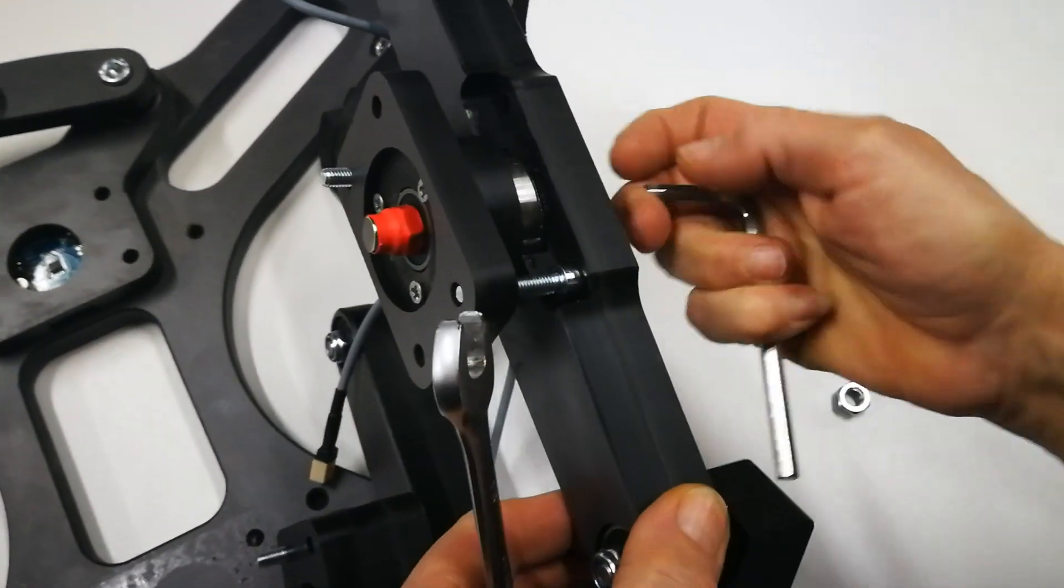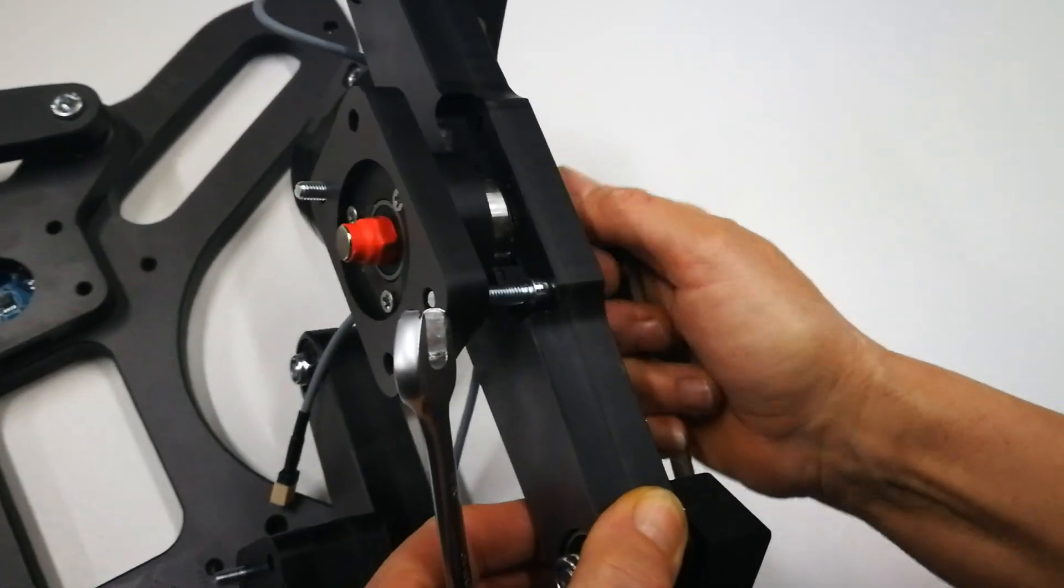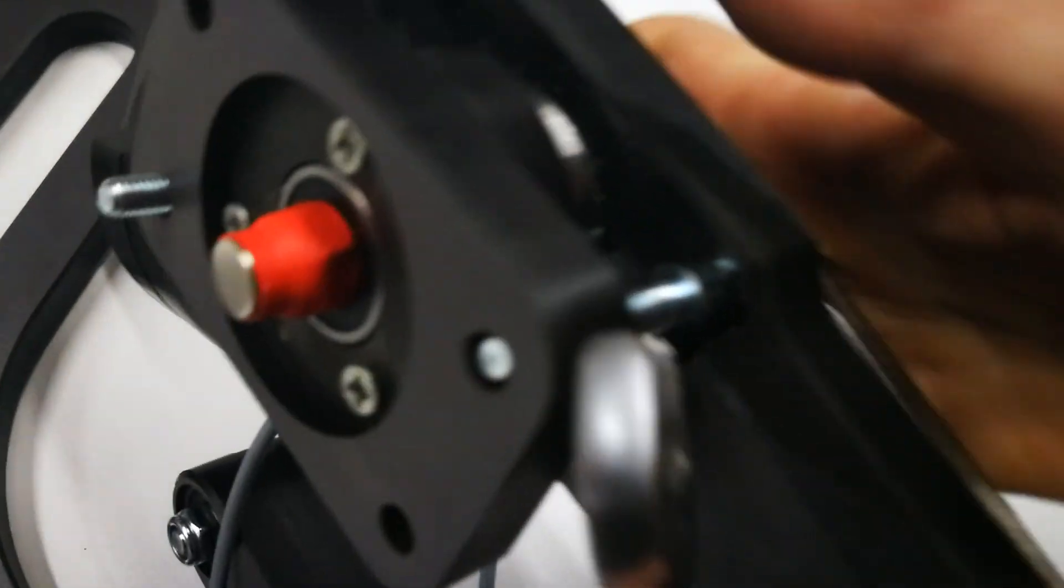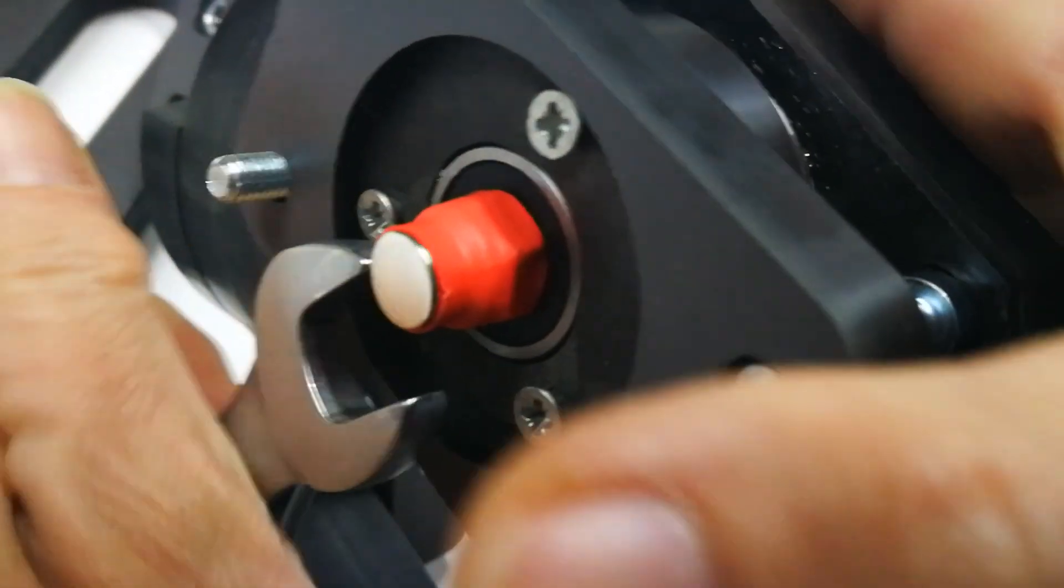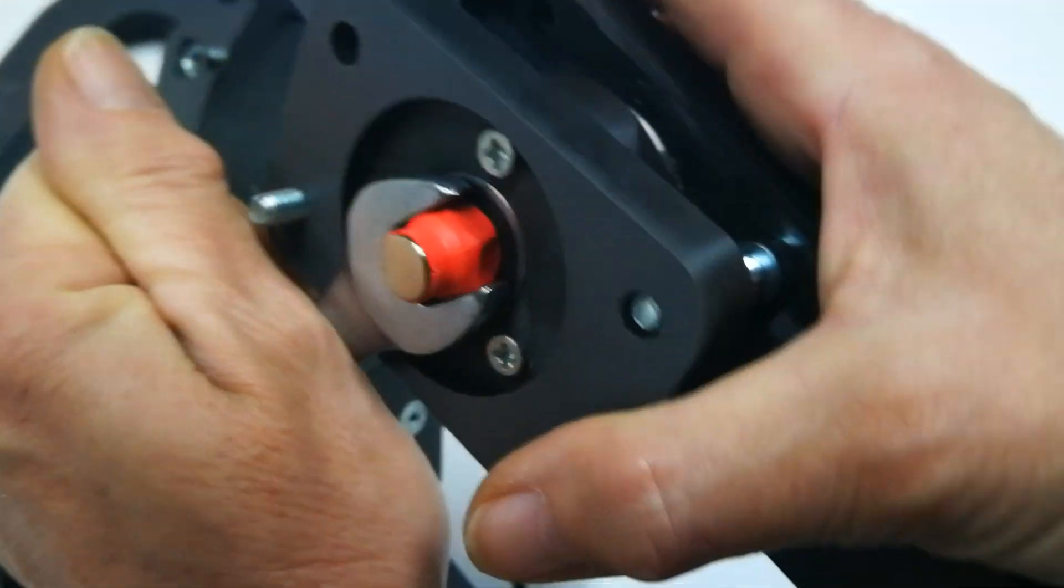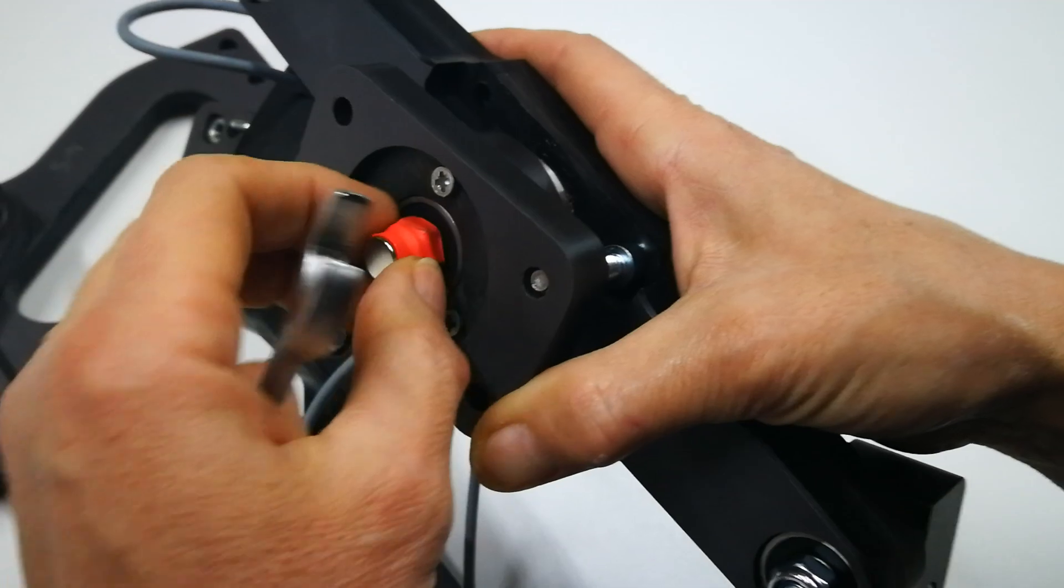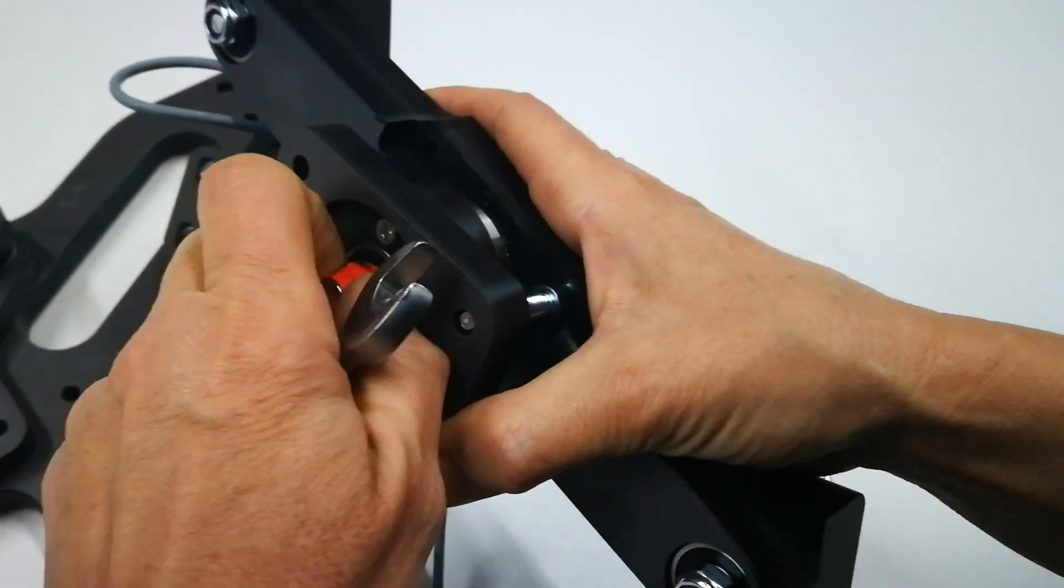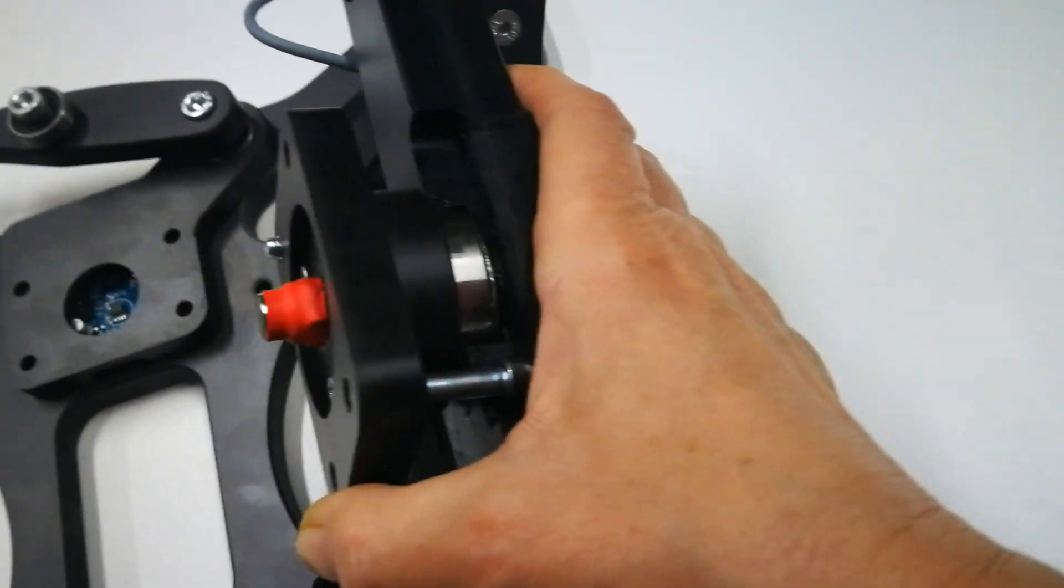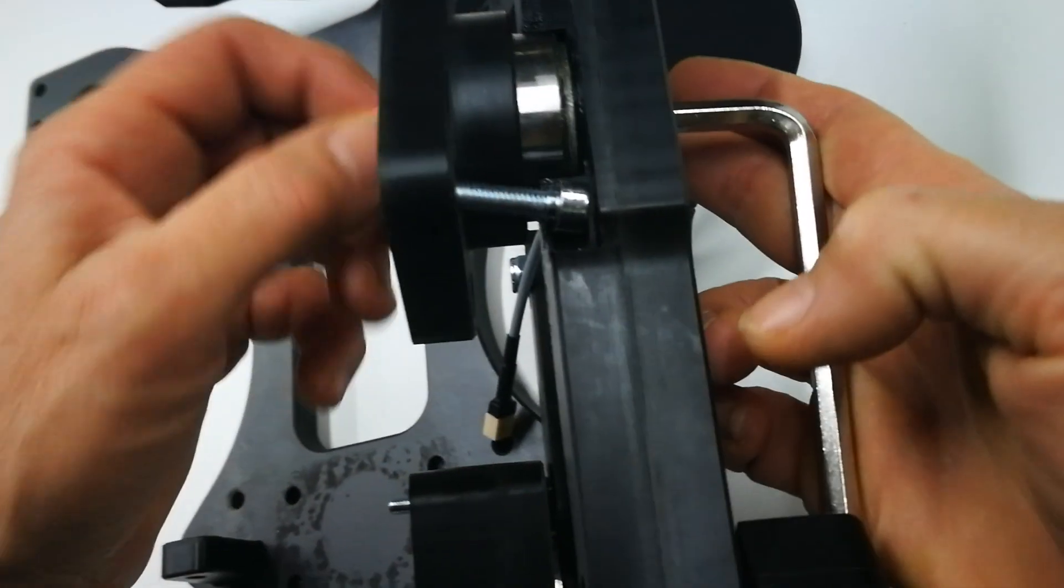What we need to do is untighten this nut here which holds the magnet in place. It is a little bit harder because there is a shrink tube over it.